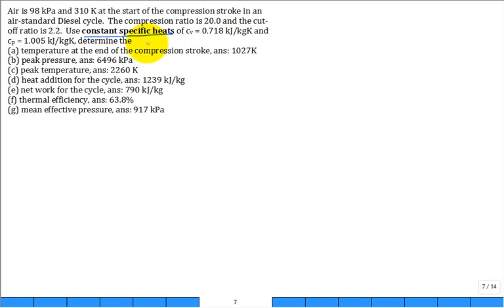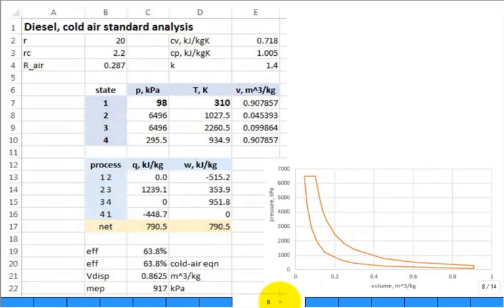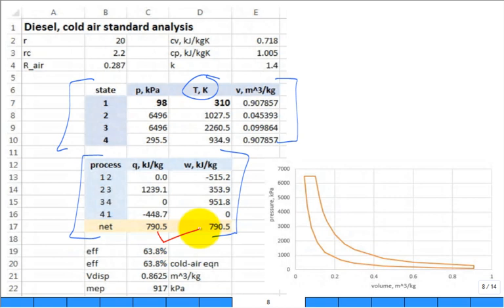All right, solve a problem with constant specific heats. What is my recommended step one? Get diagrams. Clearly label your states. Clearly know what's the process between states: adiabatic, isentropic, constant, constant pressure, constant volume. Then get a table of my state properties, especially temperature. Then get a table of energy transfers. Do a little bookkeeping, make sure that they match.